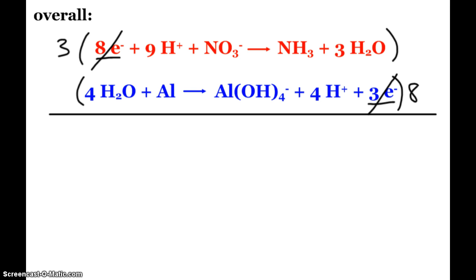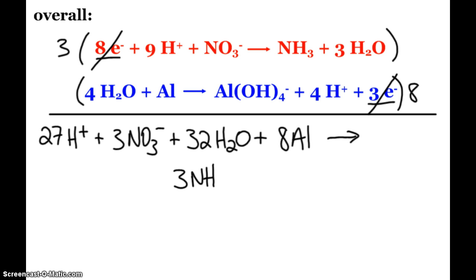And so when I go ahead and combine now, I will end up with three times nine, that is 27 hydrogen ions plus three nitrates. Then on the bottom, I will have eight times four, 32 waters plus eight aluminums. And that is going to produce, what do we have, three ammonias plus nine waters, three times three, nine waters.